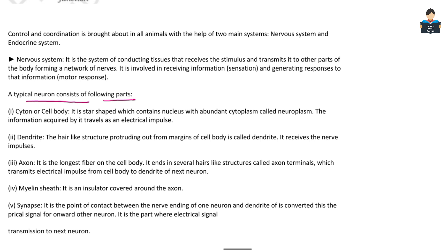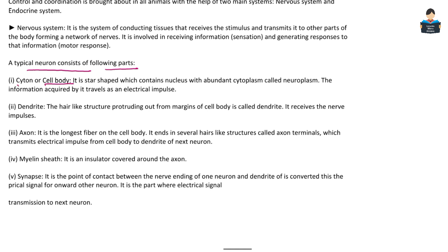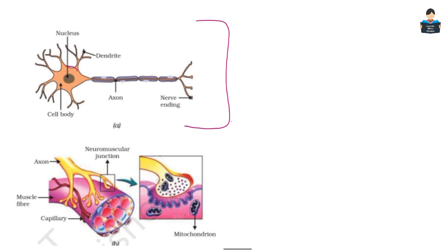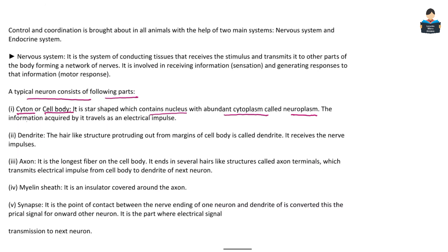The neuron diagram is very important. A typical neuron consists of several parts. First is the cell body, also called the cytone. It is a star-shaped structure that contains a nucleus and abundant cytoplasm called neuroplasm. The information acquired by it travels as an electrical impulse.